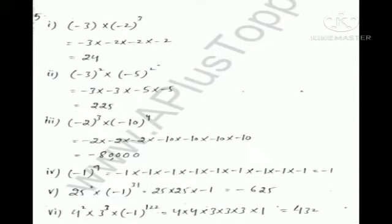In question number 5, we have to simplify the following. Part 1 is minus 3 multiplied by minus 2 raised to the power 3, so we multiply all these numbers: minus 3 into minus 2 into minus 2 into minus 2. The answer is 24, as the negative signs cancel each other. You can do the other parts by the same method.